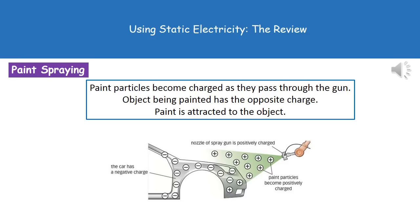The second use of static electricity is in paint spraying. The arm of the paint sprayer is charged up so that as the paint passes out of the spray gun it becomes charged — in the diagram the paint is becoming positively charged. At the same time, the object being sprayed is given the opposite charge, so the car body is given a negative charge. Because opposites attract, the paint is drawn to the car.